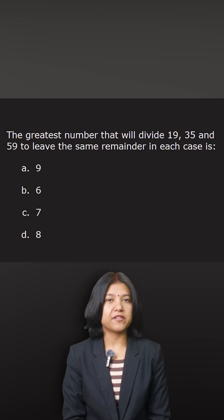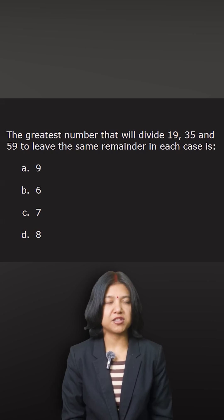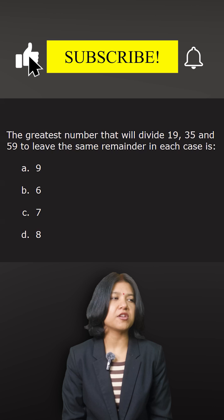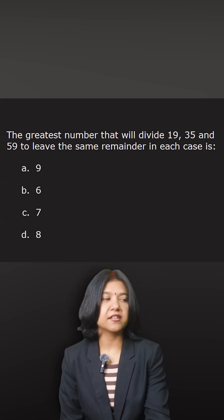To find the greatest number that divides the given set of numbers such that it leaves the same remainder, note that you don't know the number that you're dividing and at the same time you don't know the divisor. In such cases when you just know that they leave the same remainder, what's the procedure? You look at the given numbers.